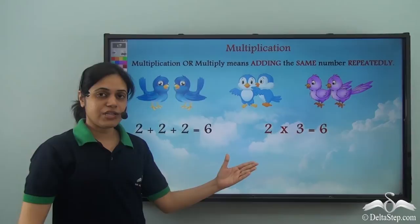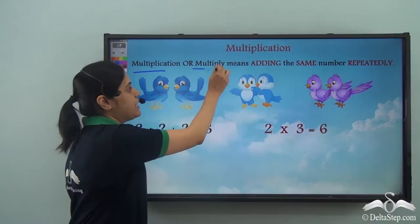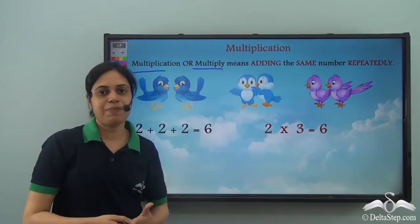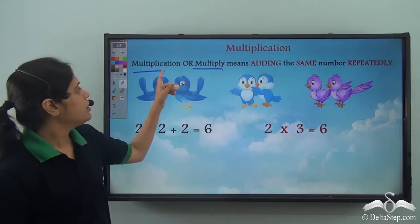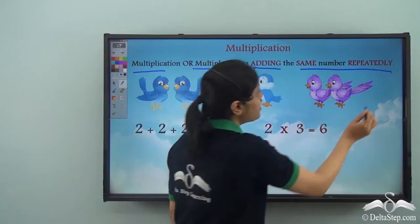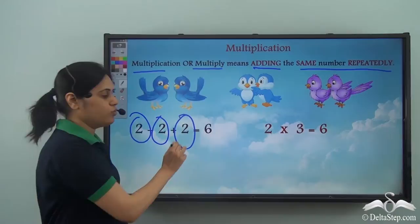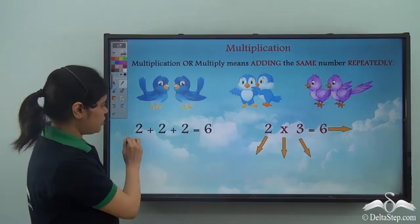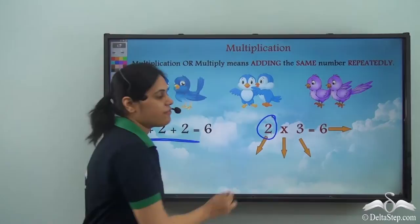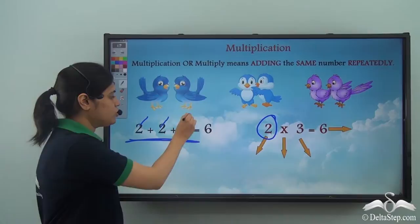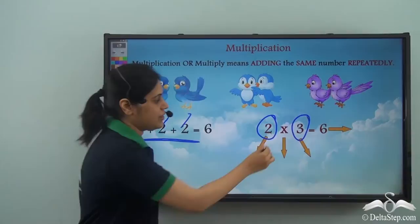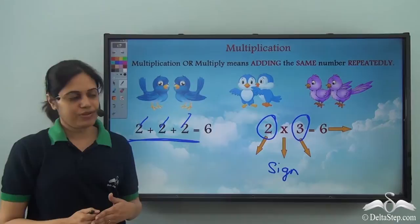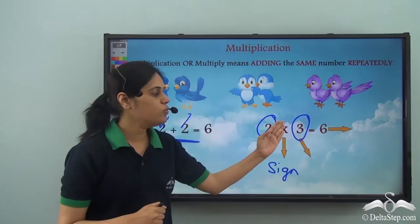So this is what multiplication is. Multiplication means adding the same number repeatedly. Remember, it's adding the same number. So this two is being added again and again — how many times? One, two, three — three times. So I have three here. This is the multiplication sign or symbol, and six is the answer when we multiply two, three times.